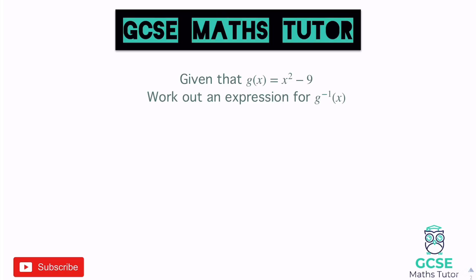In this question I've got g of x, which is exactly the same as f of x — it's just a different function with a different letter. So sometimes you might have this, but don't let that throw you. Given that g of x equals x squared minus 9, work out an expression for the inverse function of g. Same again, I'm going to replace g of x with y, so y equals x squared minus 9, and let's just make x the subject.